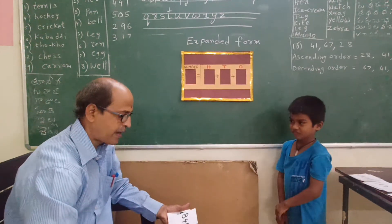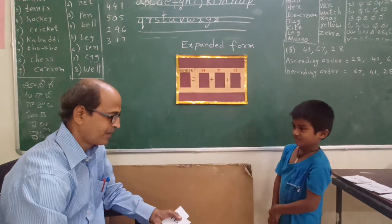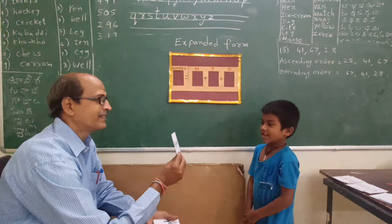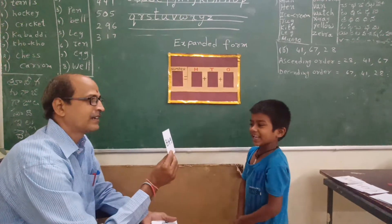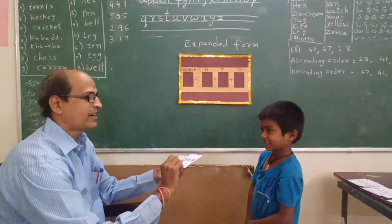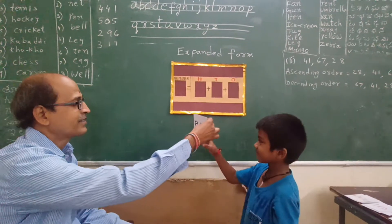Today we will do a small activity on expanded form. Read this number. What is this number? 849. Now insert this card on the number box.